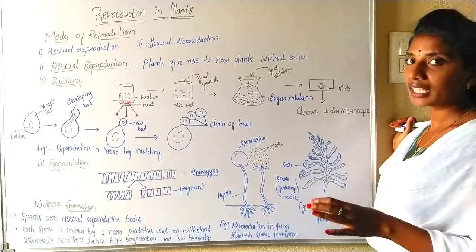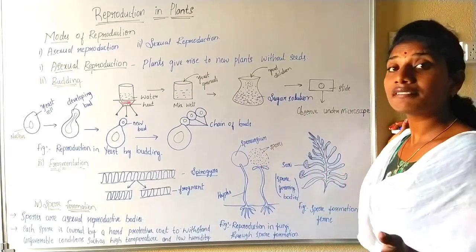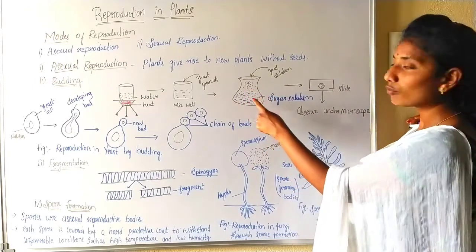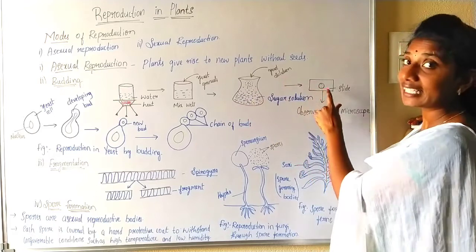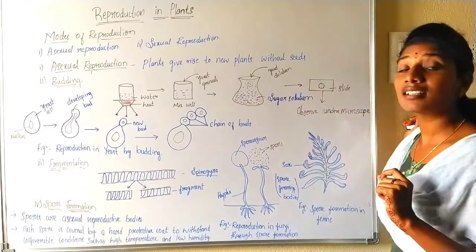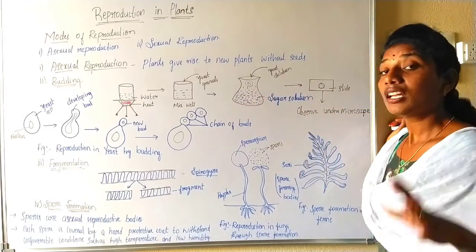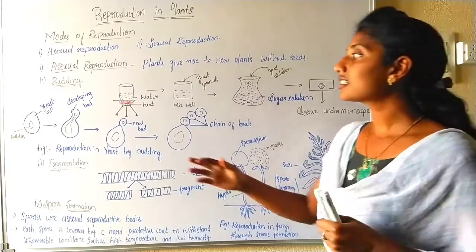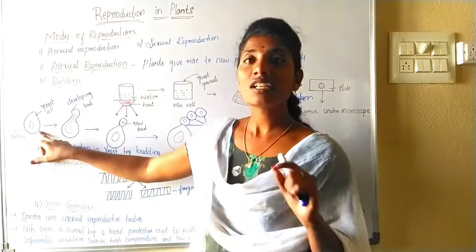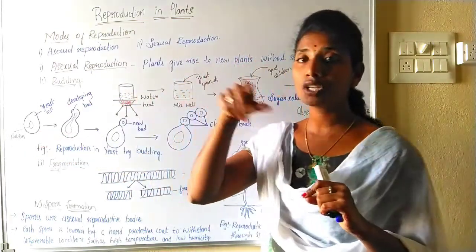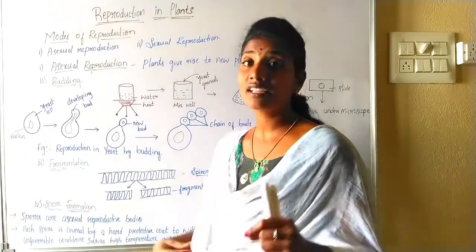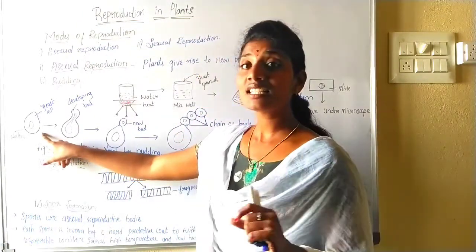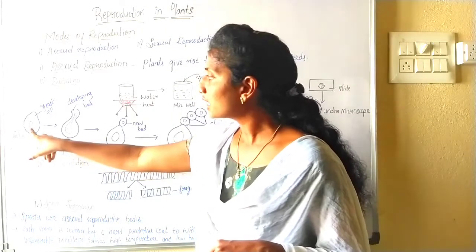After some time, say after 30 minutes, collect a drop of the sugar solution on a clean glass slide and observe it under a microscope. When we see it under the microscope, you can see structures resembling this — a general normal yeast cell which is oval in shape. Oval shape means egg shape. You can see that yeast cells are oval in shape, and this is the nucleus.